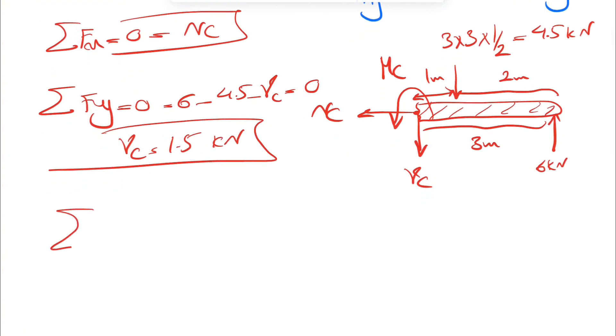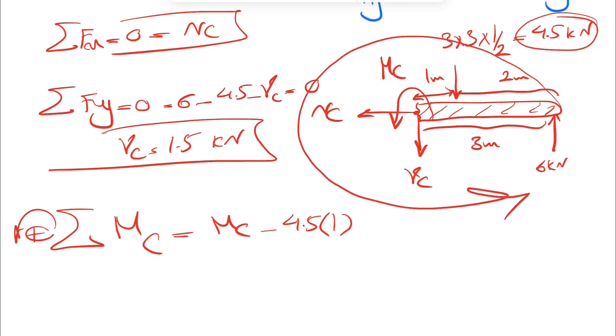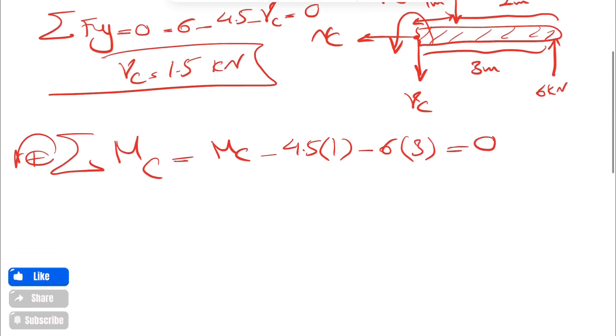And last one is the bending moment, which we're going to do the moment about point C. We're going to have MC, which is counterclockwise, plus the moment of our distributed force. It's going to be clockwise, so actually it will be negative. So negative 4.5 times the distance is 1. And we have the moment of 6 kilonewtons, which is counterclockwise, so positive, 6 times 3 equals zero, or our moment would be 18 plus 4.5.